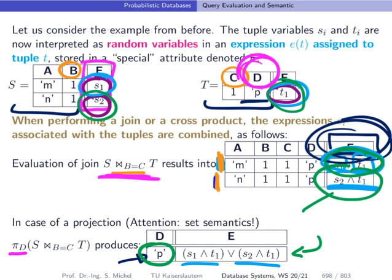What we do not have yet are the probabilities. Now we have a way to construct these equations based on the basic variables attached to these individual tuples and rules which we will define next how to work with this expression when we apply an operator from relational algebra.